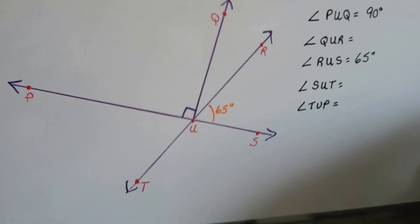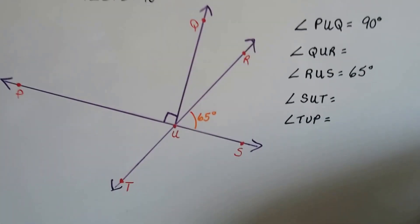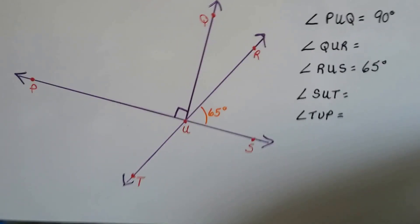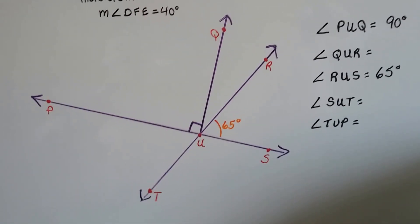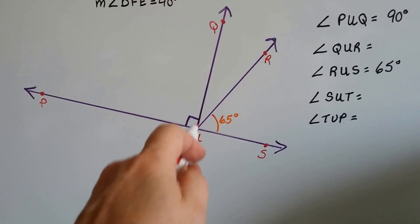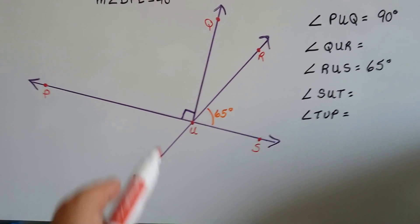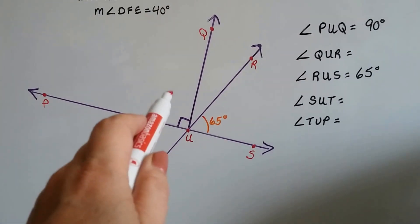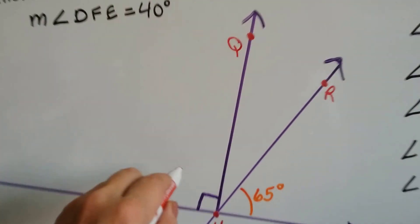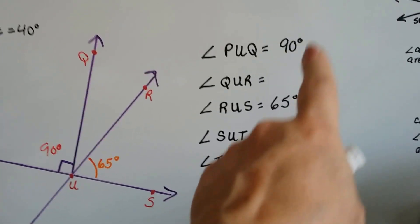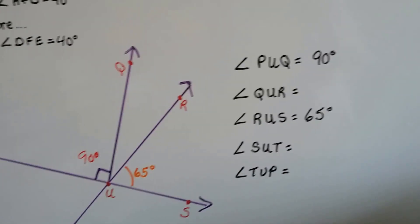So let's take a look at this one, and let's see if we can figure out what all these missing measures are. So we've got P, Q, R, S, T, and U. The vertex is going to be U. Well, do you see what I see right away? We've got a 65 degree angle here and a 90 degree angle here.